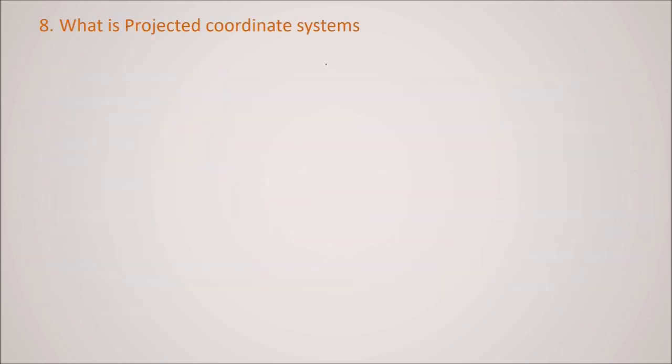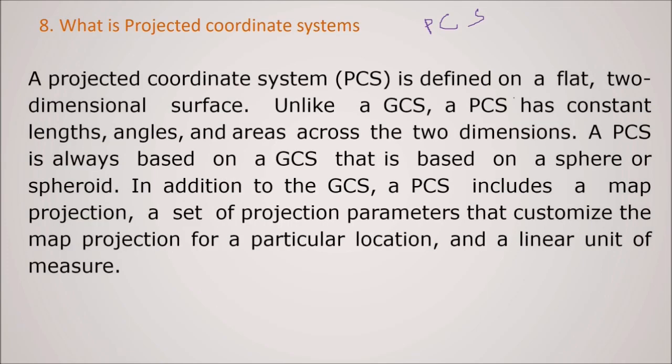What is PCS now, projected coordinate system? A PCS is defined on a flat two-dimensional surface. Unlike GCS, PCS has a constant length, angle and areas across two dimensions. So PCS is always based on a GCS that is based on a sphere or spheroid. So in addition to this GCS, a PCS includes a map projection, because you know 3D to 2D there has to be some projection. So in addition to GCS, PCS includes a map projection, a set of projection parameters that can systemize the map projection from a particular location and also a linear unit of measure.